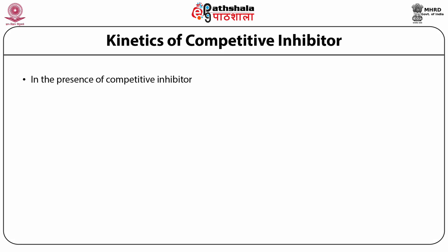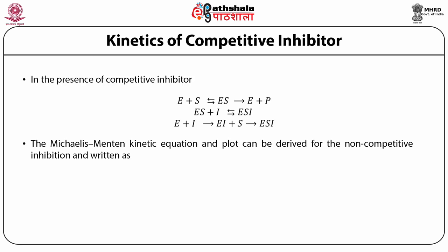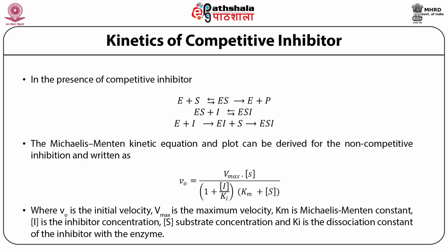Based on the assumptions of competitive inhibition, we can derive the Michaelis-Menten equation for a competitive inhibitor. Enzyme combines with substrate to produce ES complex, and ES complex forms products. In the presence of competitive inhibitor, the inhibitor combines with enzyme to produce an enzyme–inhibitor complex that does not form any product. Deriving the Michaelis-Menten equation for competitive inhibition gives: V₀ = Vmax × [S] / (KM(1 + [I]/Ki) + [S]). Here, V₀ is initial velocity, Vmax is maximum velocity, KM is the Michaelis-Menten constant, [I] is inhibitor concentration, [S] is substrate concentration, and Ki is the dissociation constant of the inhibitor with the enzyme.